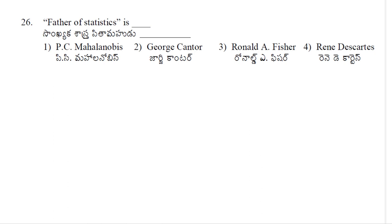Here is the first problem. Father of Statistics is P.C. Mahalanobis — that is option 1. P.C. Mahalanobis is Father of Indian Statistics. Now 2nd is George Cantor. 3rd one is Ronald A. Fisher. So 3rd option is correct. Ronald A. Fisher is called Father of Statistics.